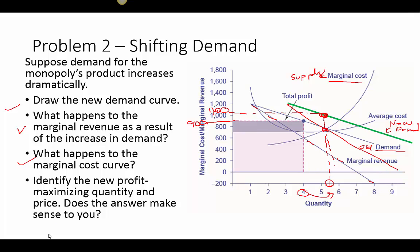Because demand increased, the monopoly is able to charge a higher price and produce a higher quantity. The profit — the area from the price down to the cost curve — is now larger than the original profit. So profit goes up. Demand still trumps monopoly power: if nobody wants the product, the monopoly can't make a profit.